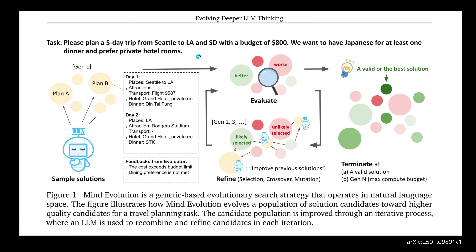Looking at the official publication by Google of Mind Evolution as a genetic-based evolutionary search strategy, I'm a little bit confused because this is rather simple. We just ask the LLM to come up with different plans. We have a feedback from an evaluator, the feedback is fed back, and with the genetic operators of selection, crossover and mutation — which I call just prompt engineering — we then have one of the best solutions given a restricted maximum compute time or financial budget. Tell me, where is the innovation in this?